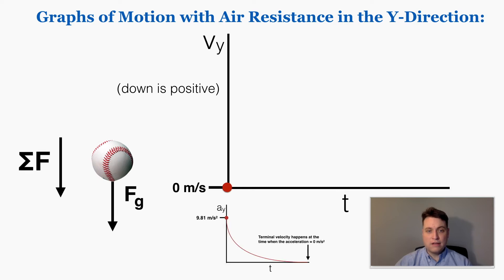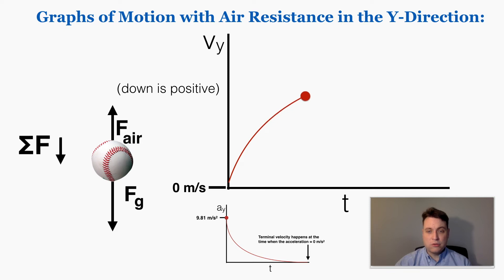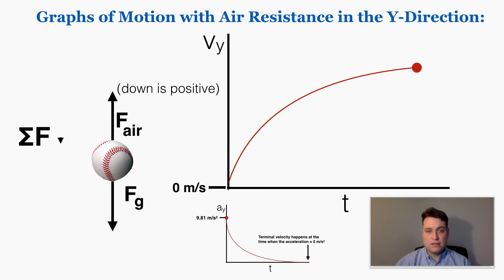We can also look at the velocity in the y-direction for this object. Since it's dropped, velocity starts at zero. As it accelerates, it gains a lot of velocity in a little time at first, but as air resistance begins to apply, it becomes harder and harder to gain additional velocity until the air resistance perfectly balances out the force of gravity.